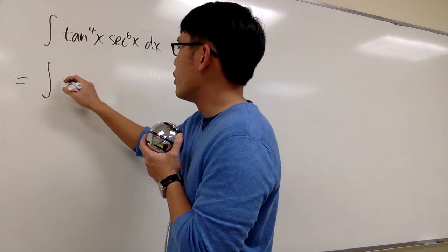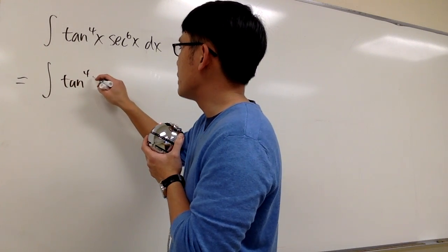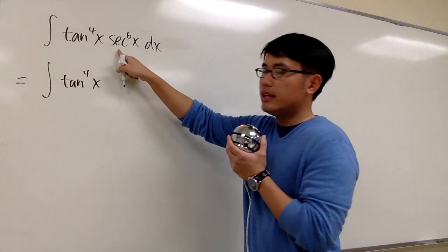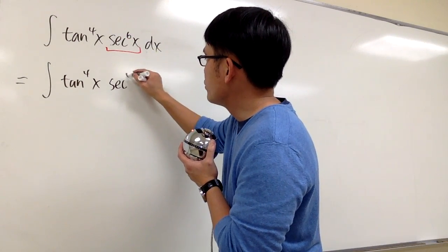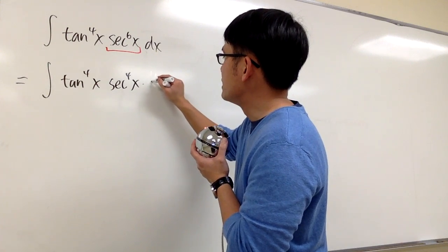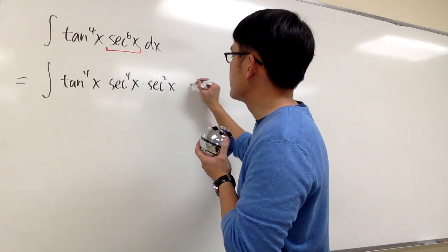Anyways, this is going to be the integral of tangent to the fourth power x. But then for the secant to the sixth power, I'm going to break this apart as secant to the fourth power x times secant squared x dx.